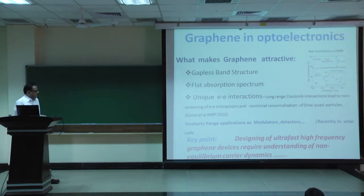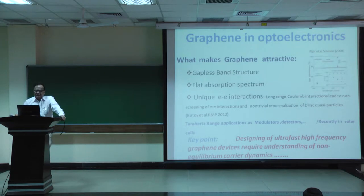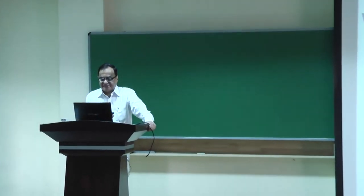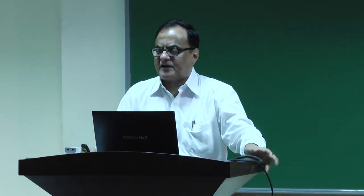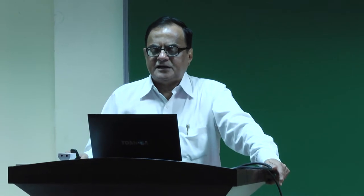Since graphene is a 2D material, coulomb interactions are not screened as much as in 3D materials. The coulomb interactions are long range, leading to very non-trivial non-screening of electron-electron interaction, which plays an important role in controlling the dynamics of these carriers. For designing ultra-fast high-frequency graphene devices, you need to understand the relaxation mechanisms for these carriers — how long they take and what are the interactions. I'll be using terahertz radiation. THz lies between microwaves and infrared, roughly 0.1 to 10 THz, or 3 mm to 30 micron wavelength; 1 THz equals 4 meV, or 33.3 wavenumbers.